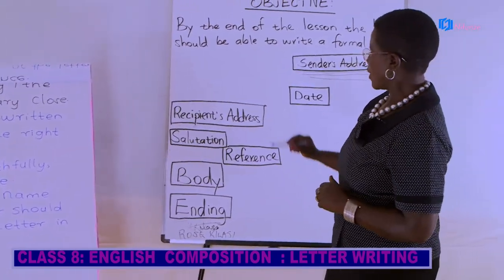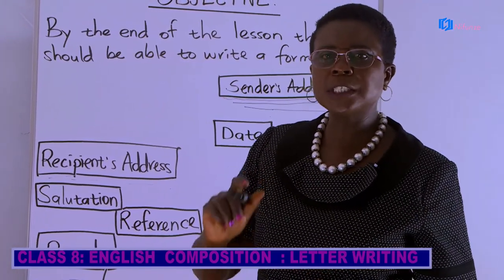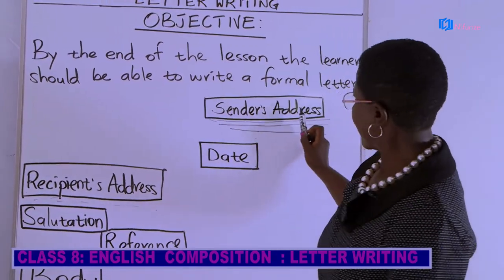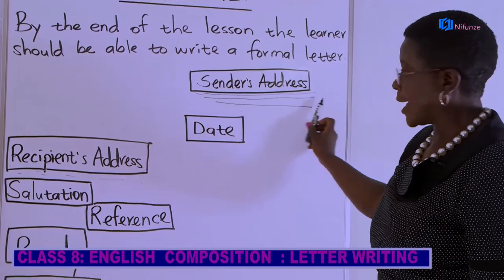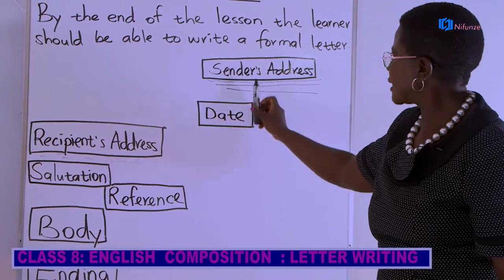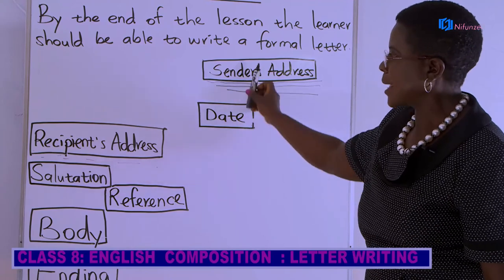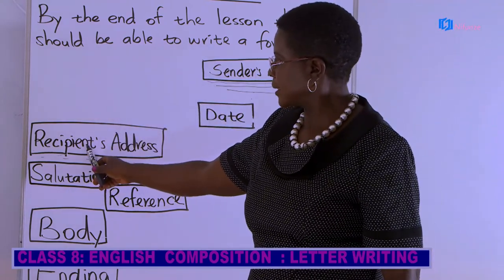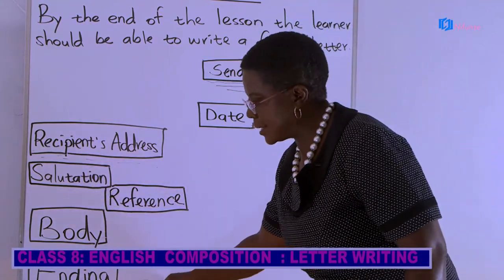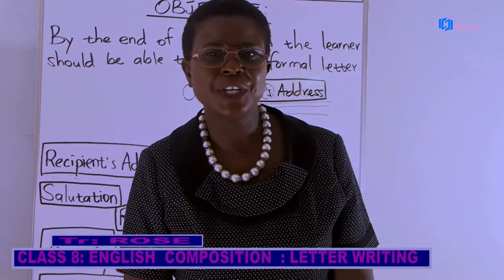So learners, when writing this official letter, remember to include all these components: the sender's address — name first, then address, then date with a skipped line; the recipient's address; salutation; reference; body; and ending with your signature and full name. Till next time, goodbye, and remember to keep safe.